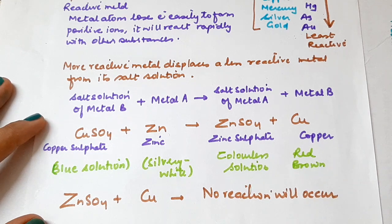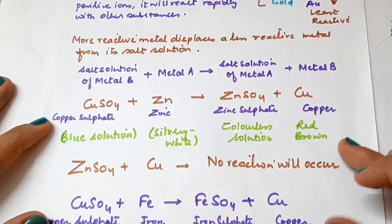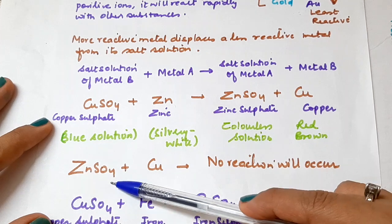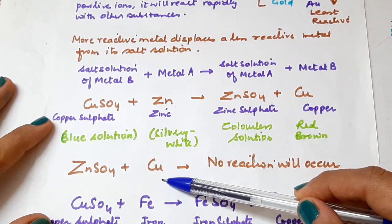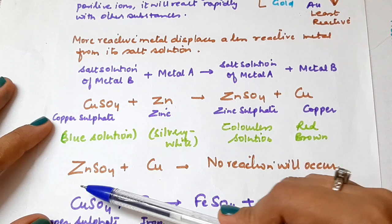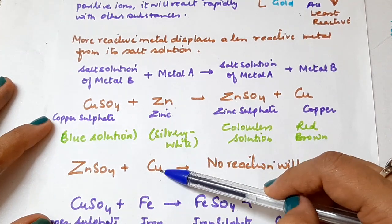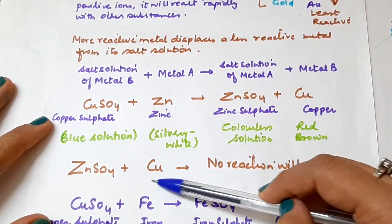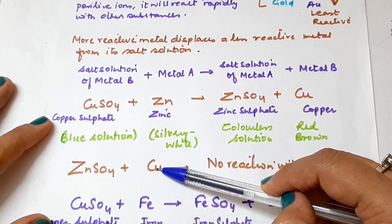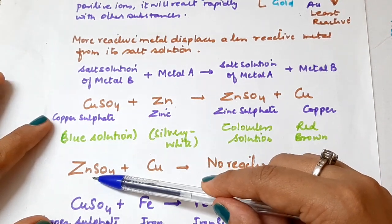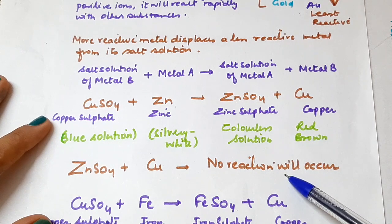Let's take the reverse of this reaction as another example. If zinc sulfate reacts with copper, what will happen? We saw in the reactivity series that zinc is more reactive than copper. So copper is less reactive, which means copper is not able to replace zinc. Therefore, no reaction will occur.